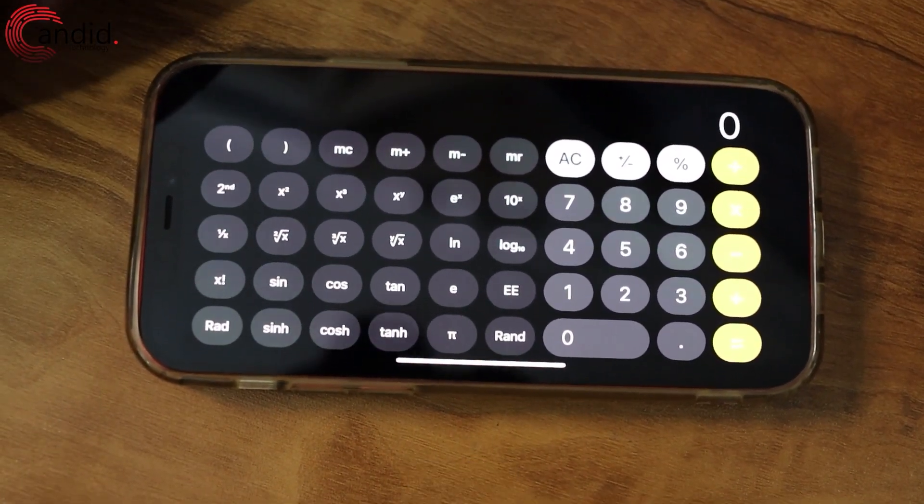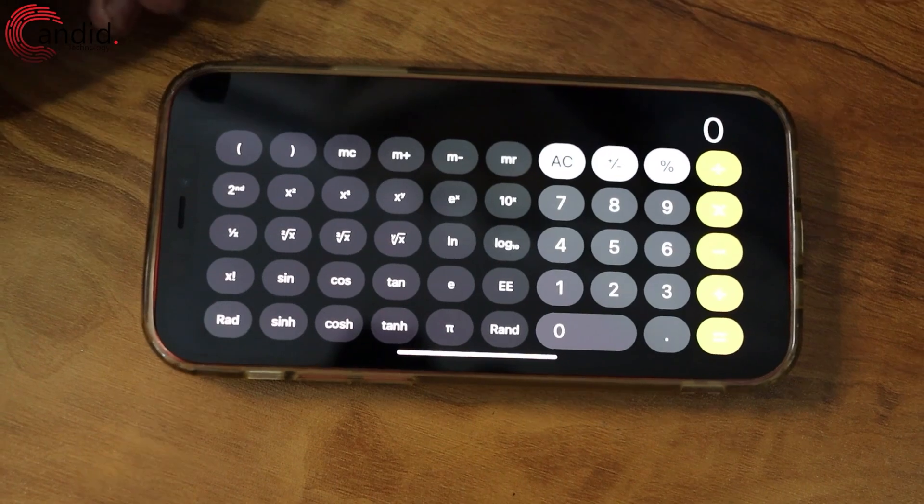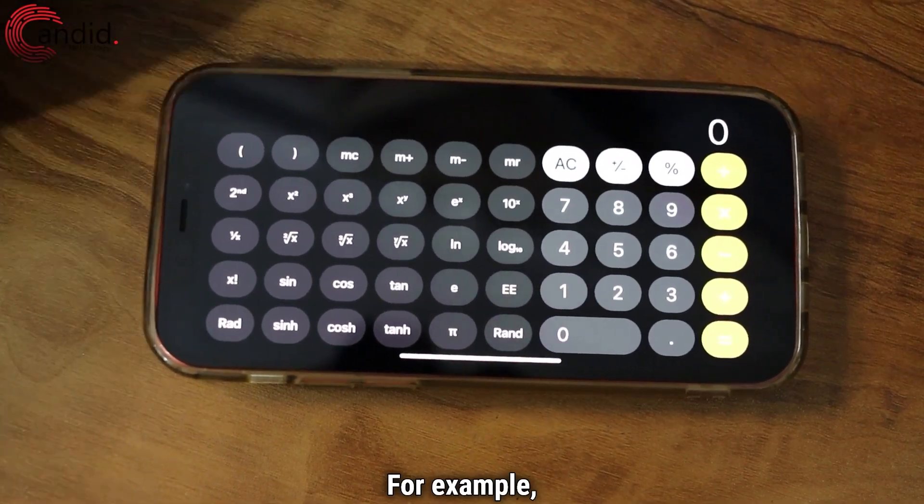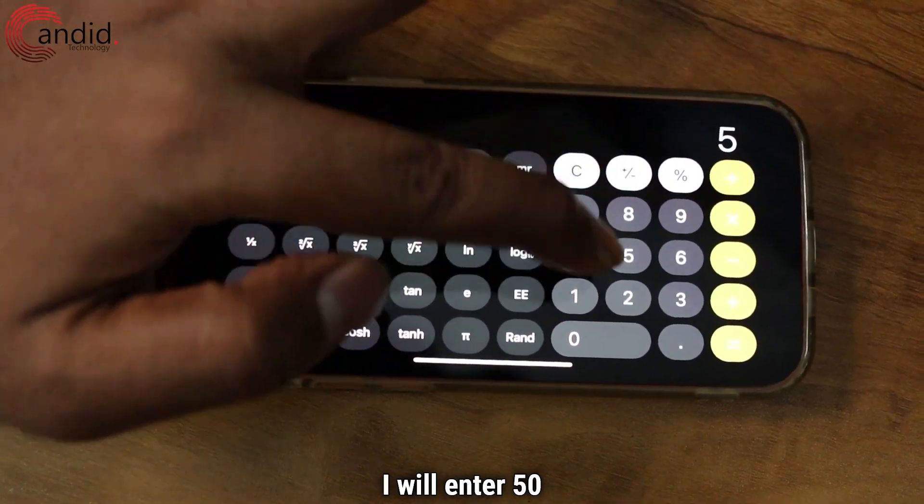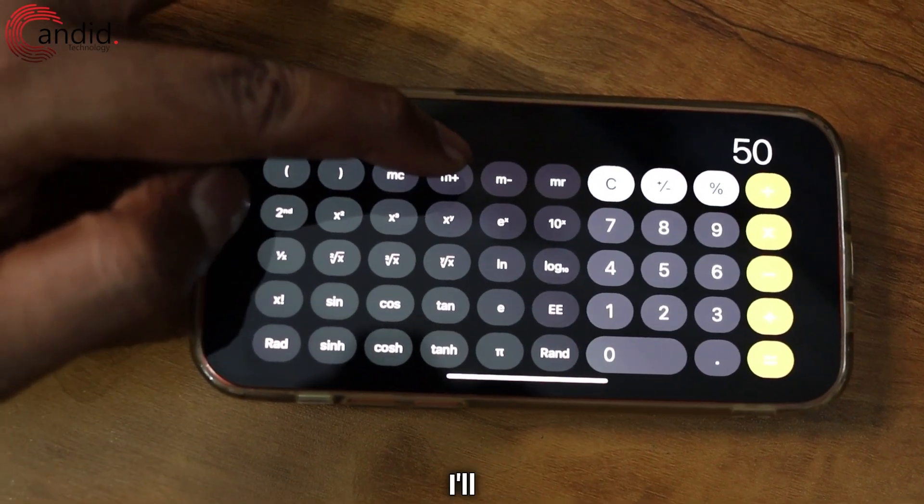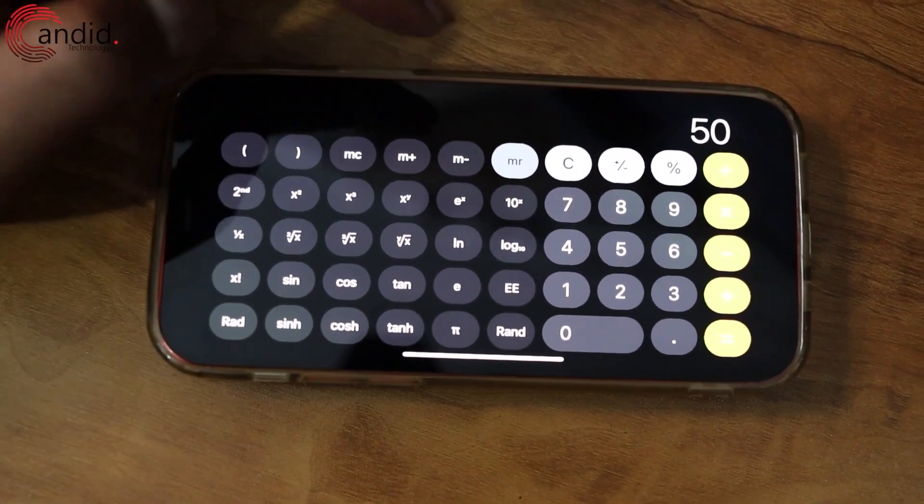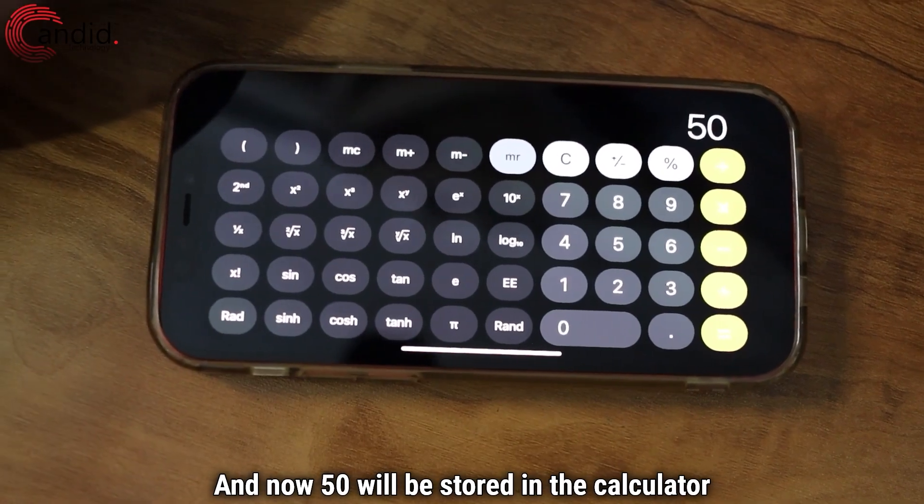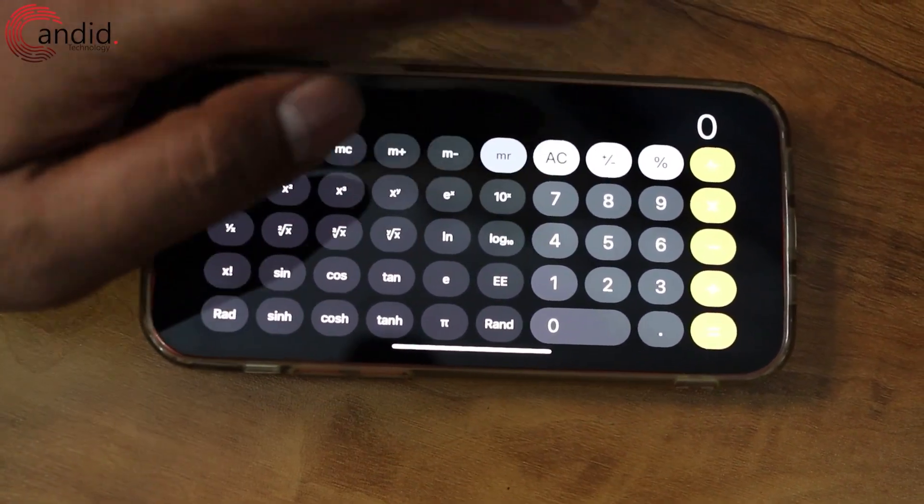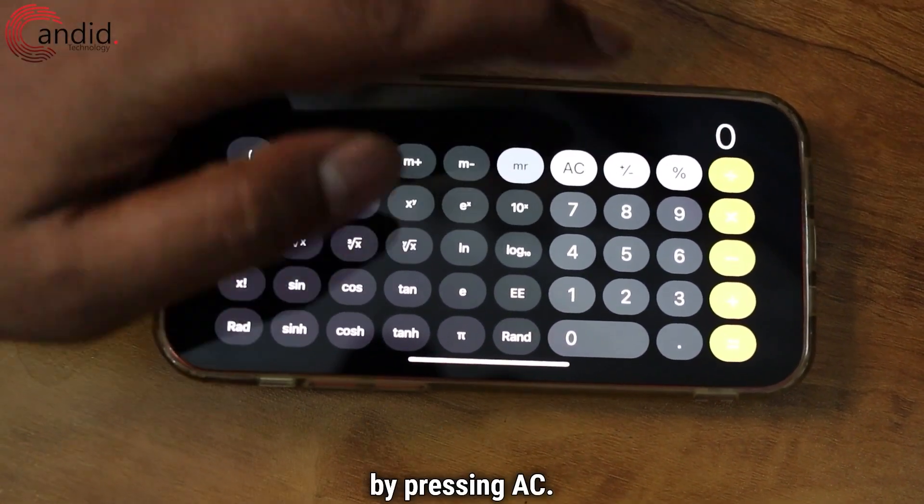Now let's show you how it is done. For example, suppose I will enter 50 and I'll use M plus. And now 50 will be stored in the calculator memory. Just remove it by pressing AC.